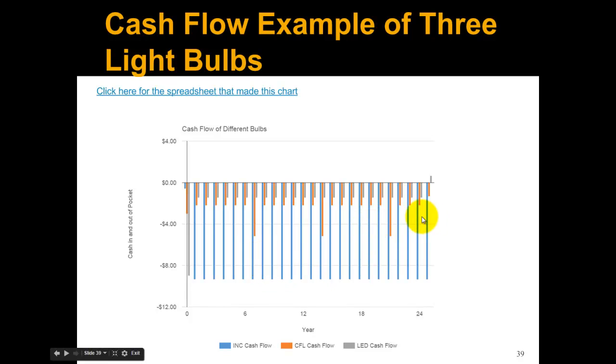If we look at the very end here, what happens is our LED actually never had to be replaced and even has a good amount of useful life left. So the residual happens at this very last year. The residual of the LED bulb makes this go into the positive, so it looks like this is cash going into our pocket because you can think about it—we're going to sell that useful LED at the end of the study period. And then we do the same thing for the CFL, but the CFL doesn't have much useful lifetime left, so it just lowers the bar from here to here. So that's an example of cash flow.